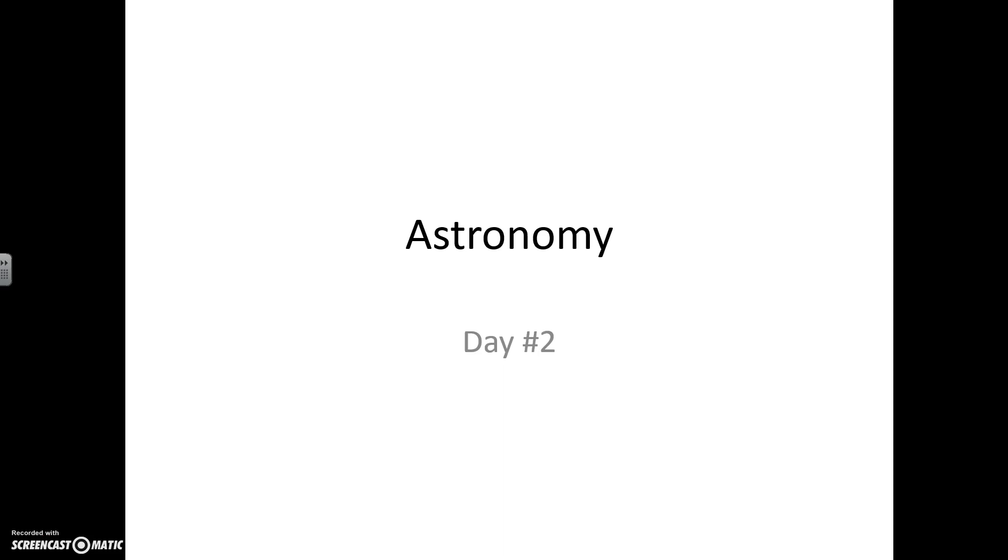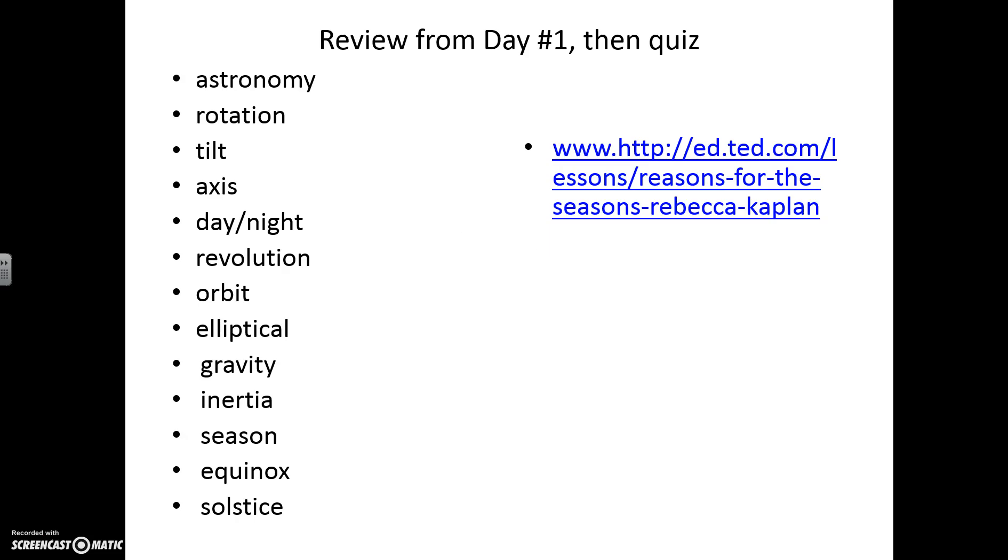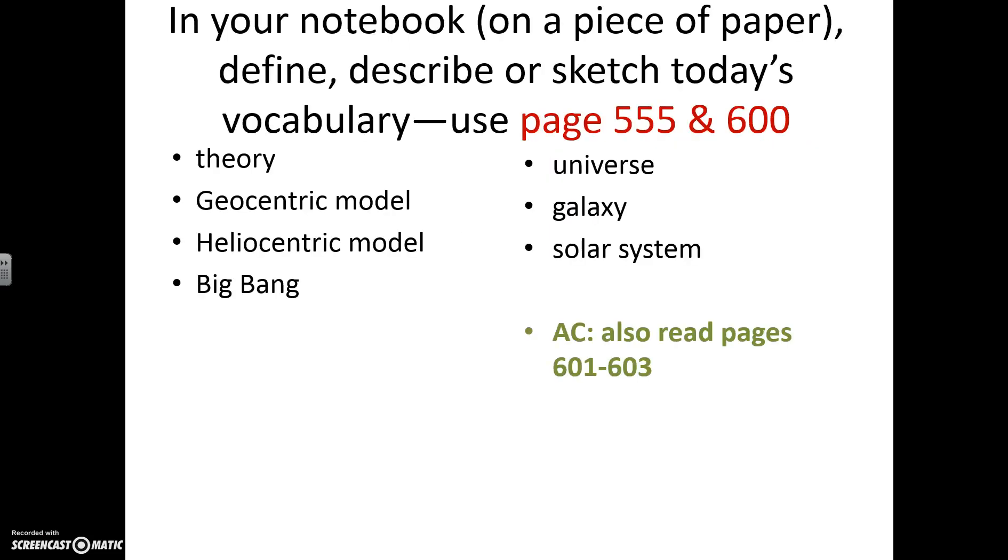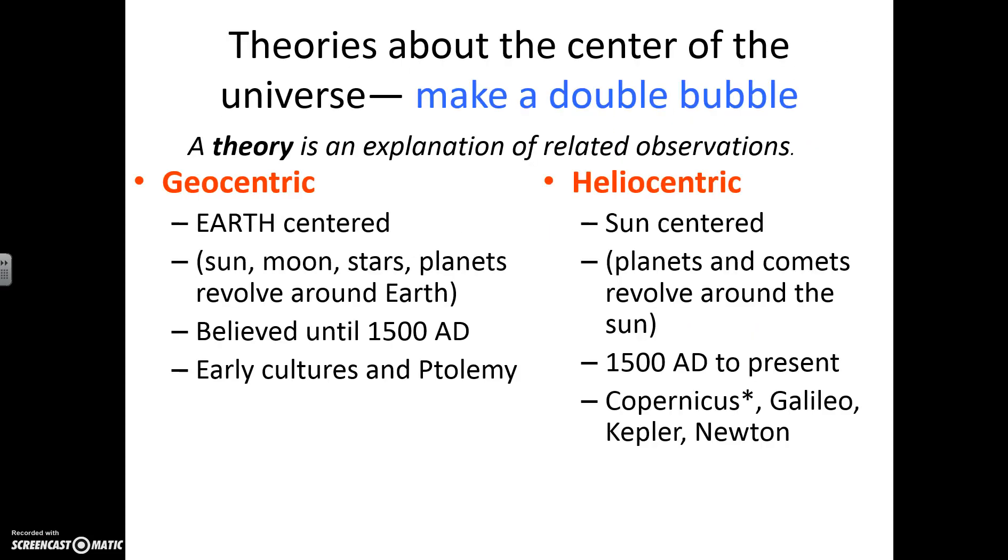So there are two different theories that we're going to talk about tonight that kind of have to do with the formation of what we believe now and what we know to be true now. So the two types. Geocentric should be on the left-hand side of your page. This is what Aristotle believed, is called geocentric. He thought that the Earth was the center of the universe. He was very self-centered, if you want to think about it that way.